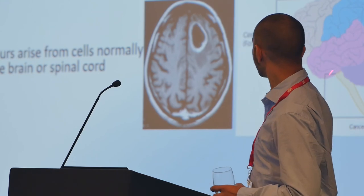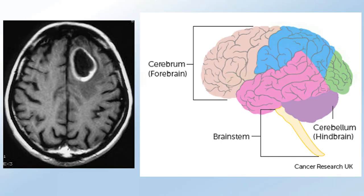The intrinsic tumors all occur either in the forebrain, which is called the cerebrum, or the hindbrain - the rear part of the brain - which is called the cerebellum. And you have some tumors that originate in the spinal cord.